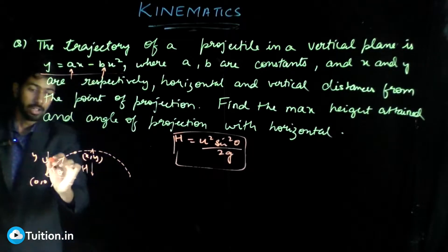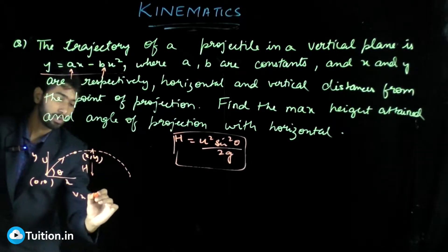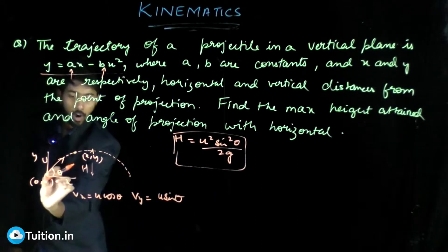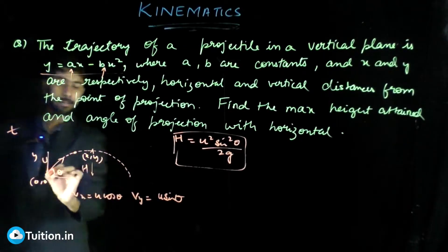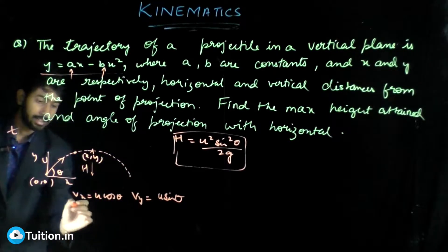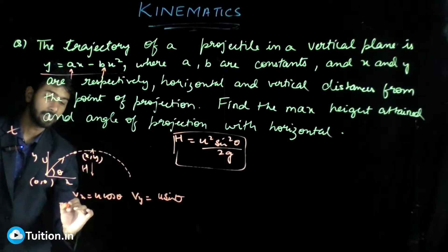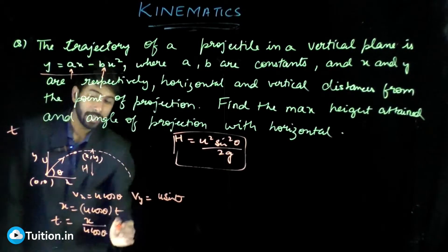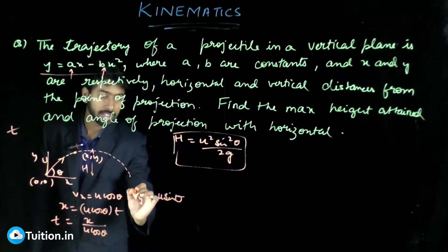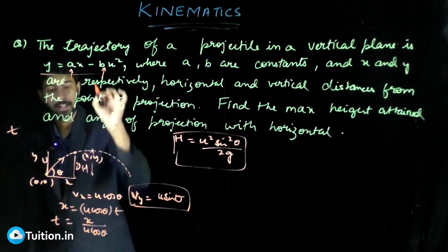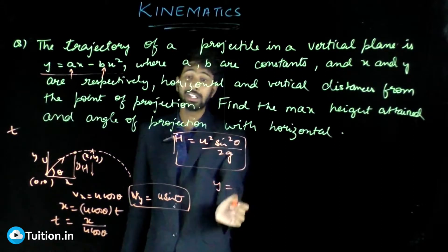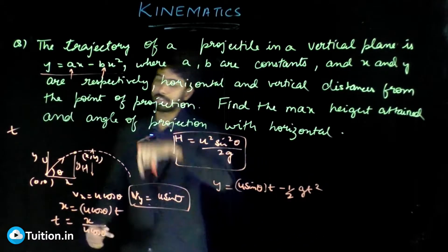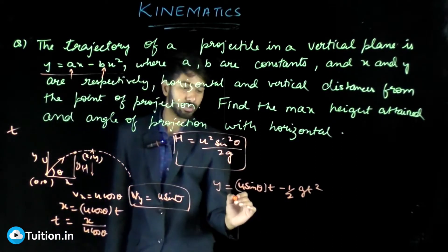If the projectile is launched with velocity u, the x-component of velocity is u cos θ and the y-component is u sin θ as initial velocities. Let it take time t to reach a point — in that time it has gone forward by distance x, so x = u cos θ · t, which gives t = x / (u cos θ). For the vertical direction, y = u sin θ · t − ½g t², with the minus sign because g acts downward while y is upward.